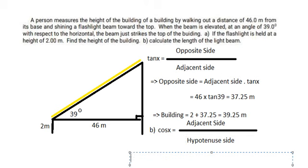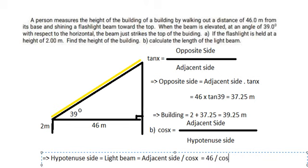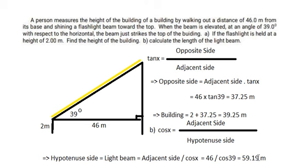So we need to calculate the hypotenuse side to find the length of the light beam. We have cosine x and the adjacent side, so the adjacent side divided by cosine x gives us the hypotenuse. We put the numbers in: 46 over cosine 39, and we get the answer of about 59.19 meters. That's the answer for question B.